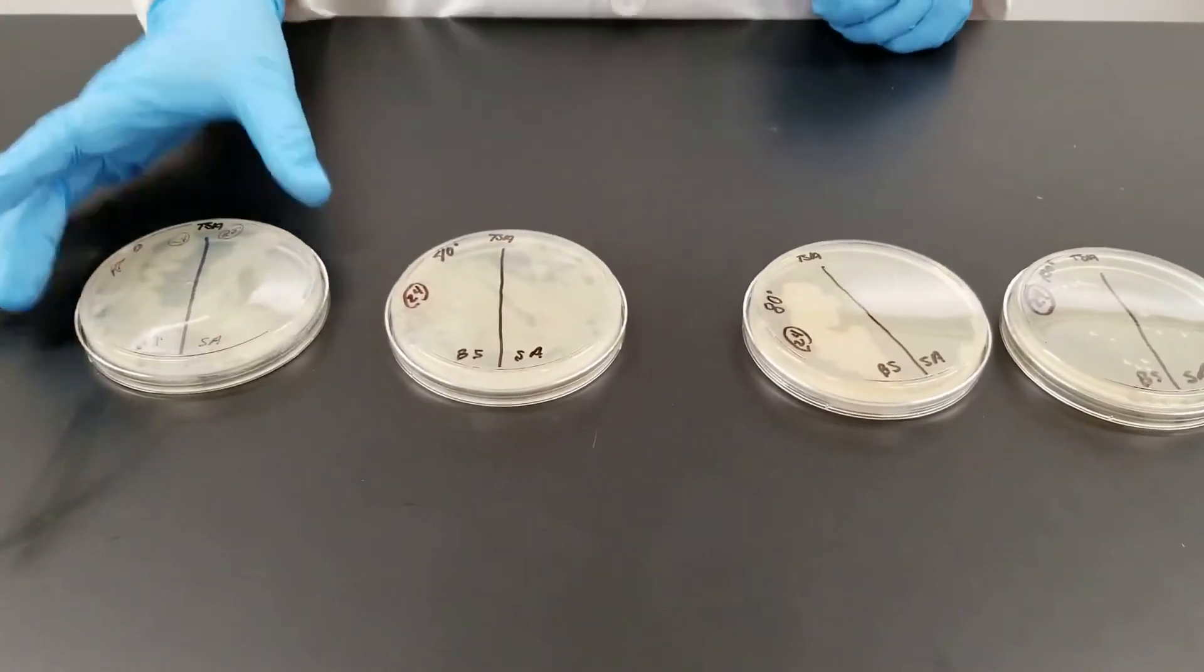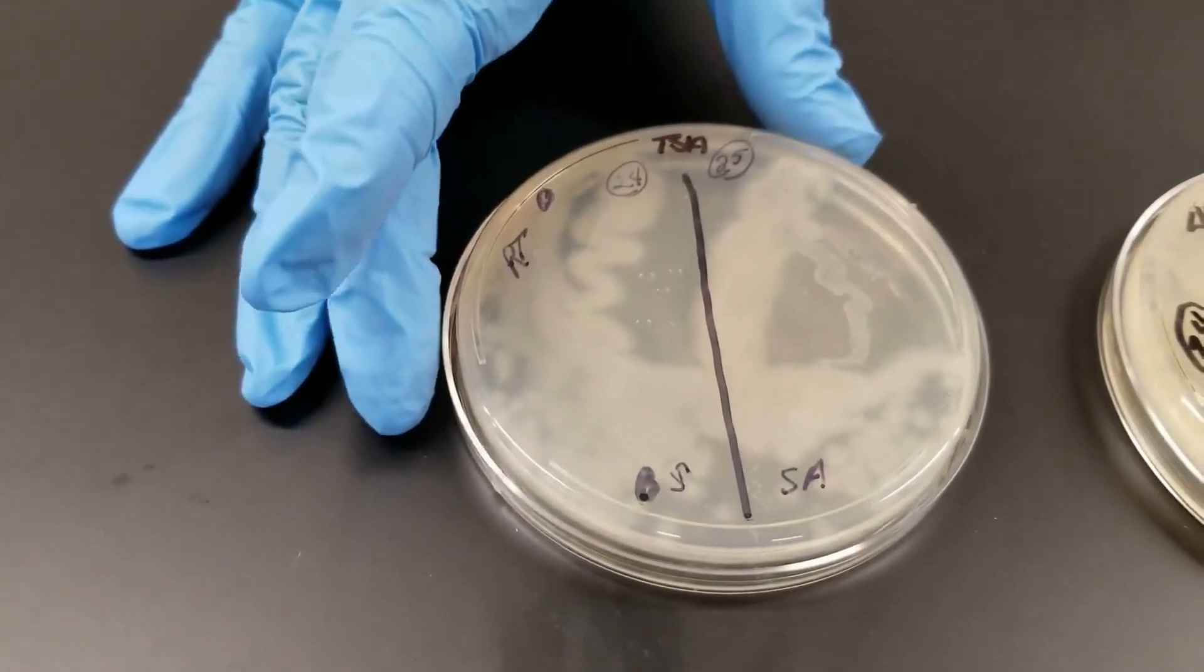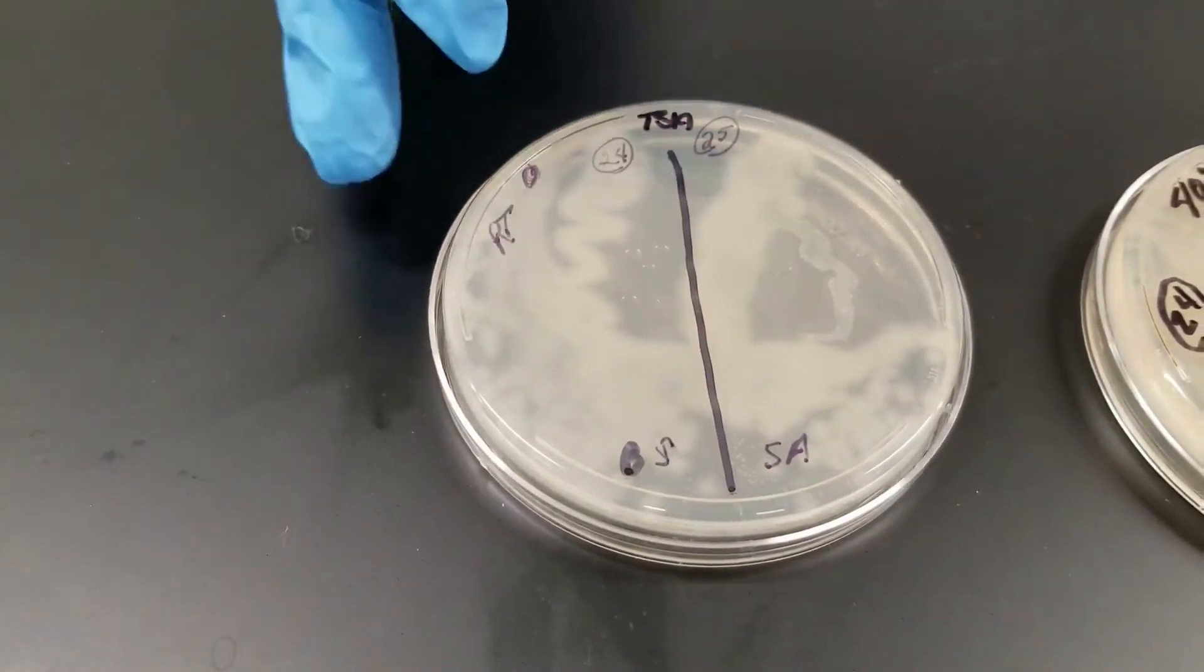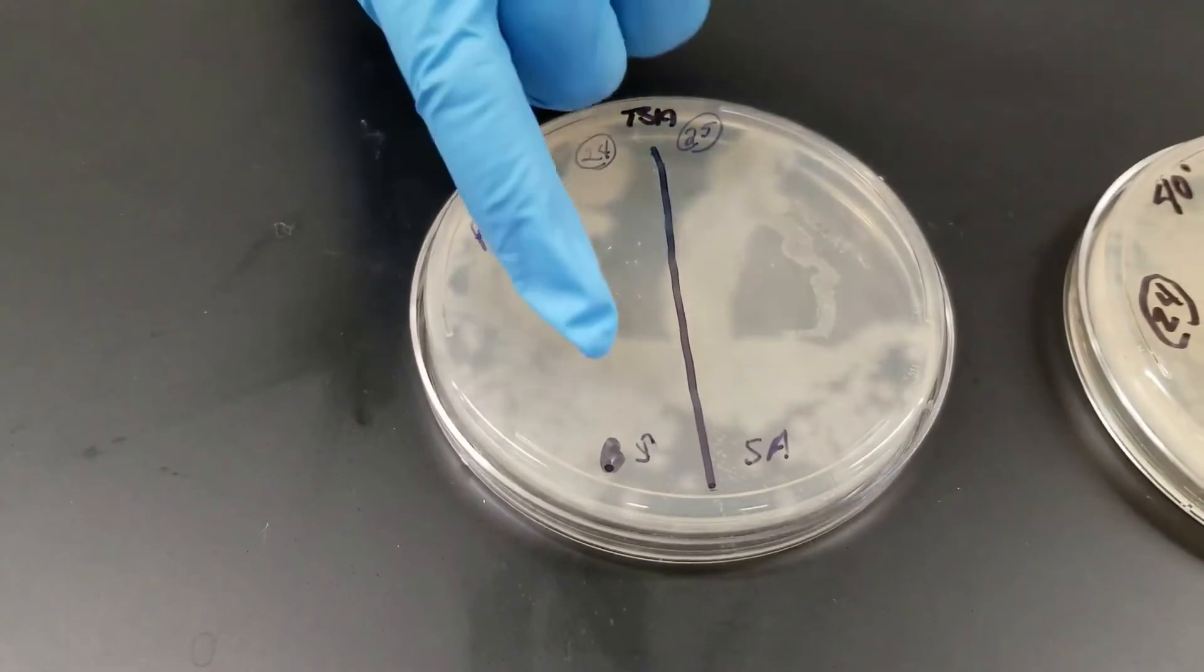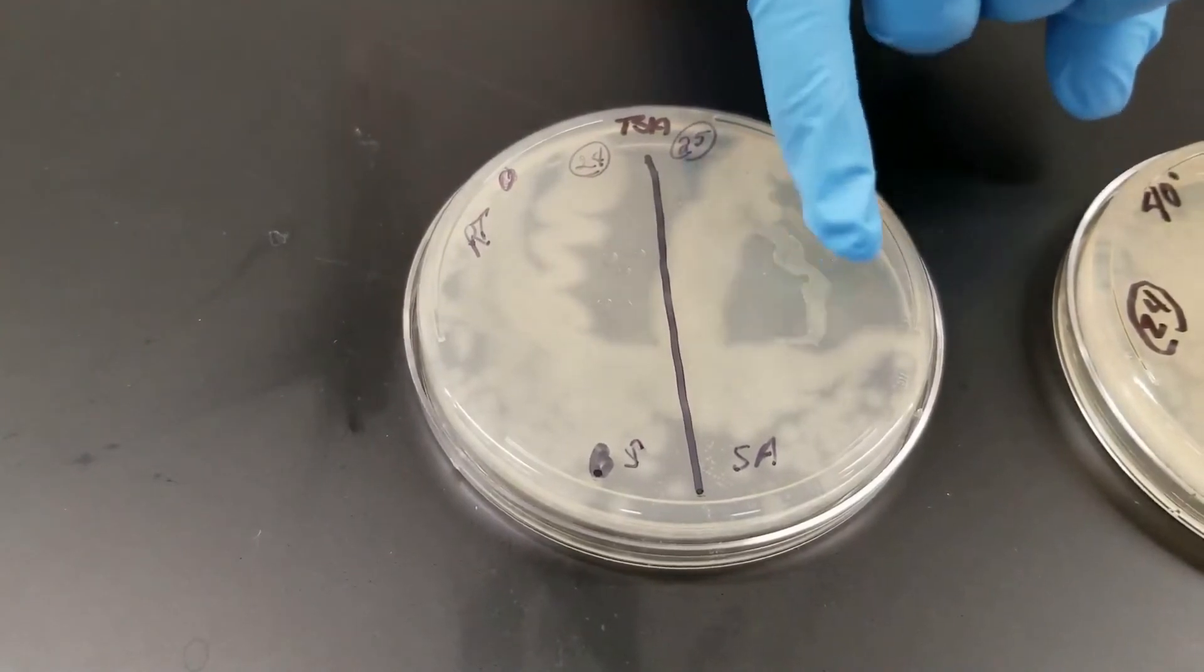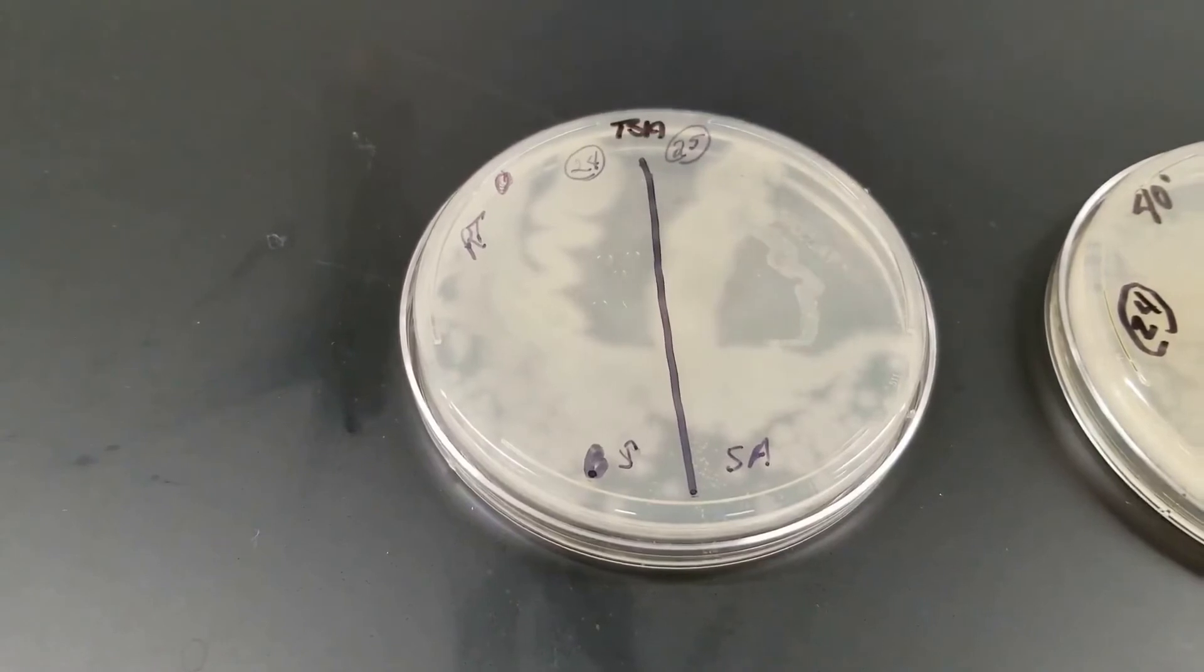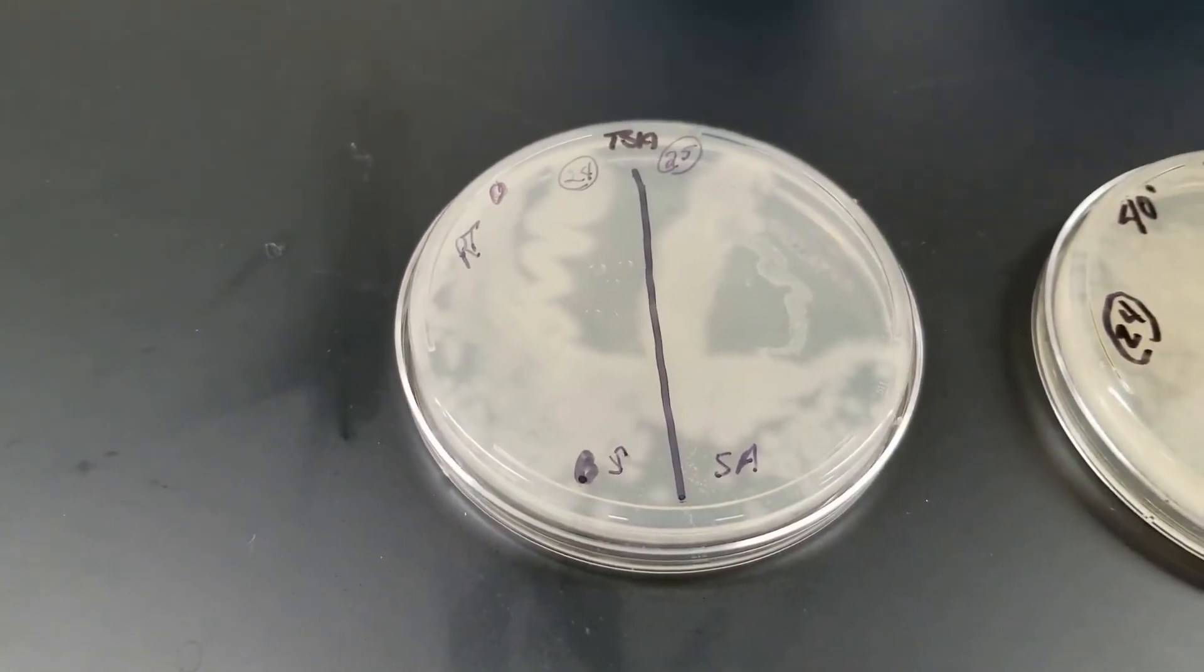This plate, if we start here, the cultures were grown at room temperature, and we inoculated the plate. As you can see, Bacillus subtilis is the thicker organism, and it did outgrow and compete against the staph aureus, which is this thinner line here. So there's some competition going on there. The Bacillus obviously grew much better, but they both grew well at room temperature.